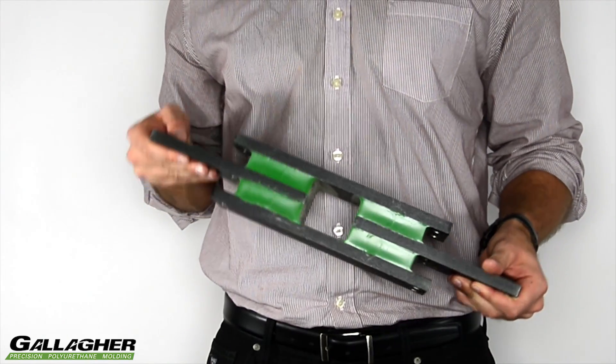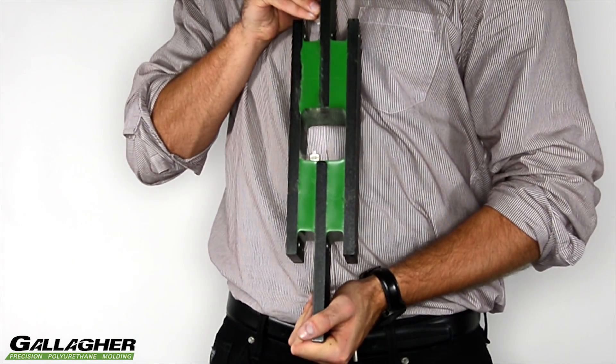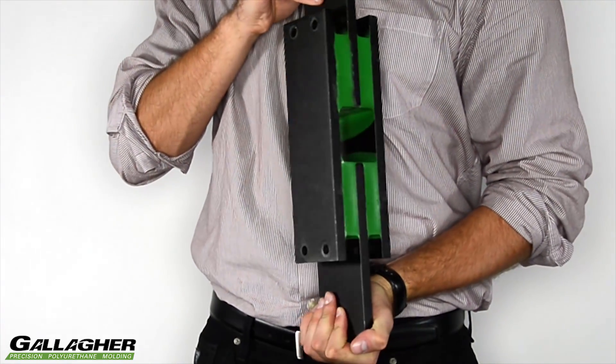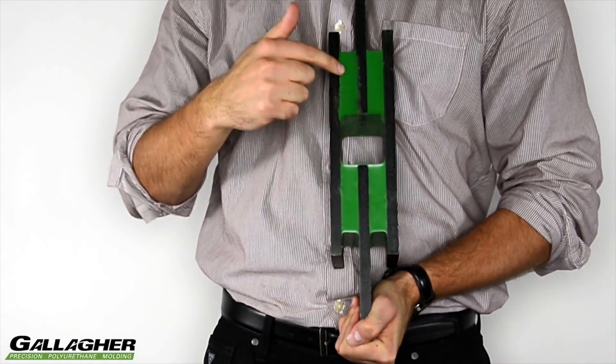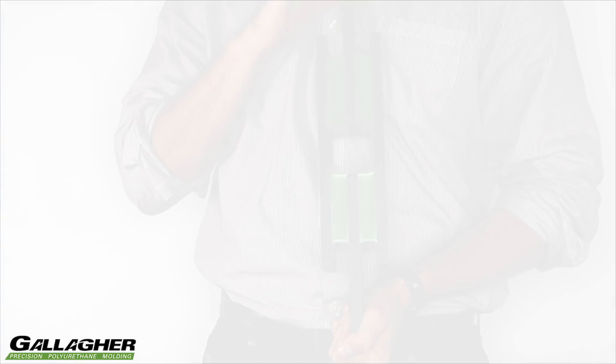We have the quad shear test specimen that we're going to use to find the shear modulus of our GC1280 polyurethane compound. The quad shear test method was chosen because it subjects the polyurethane to only shear loading.